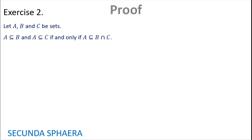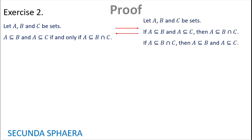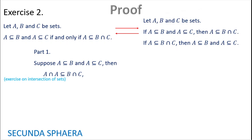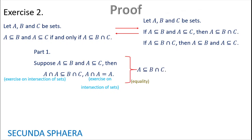Again, this exercise is an equivalence, and it can be broken into two implications. For the first implication, suppose that A⊆B and A⊆C. An exercise on intersection of sets gives that A∩A is contained in B∩C, applying intersection side by side of the containment. Another exercise on intersection of sets says that A∩A is equal to A. Using the substitution property of equality, we have that A is contained in B∩C, which is what we need for the first part.